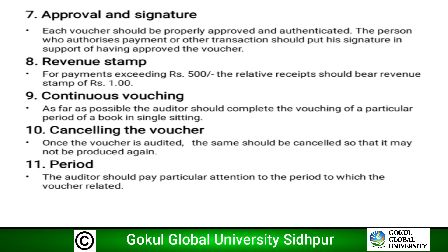Continuous vouching: as far as possible, the auditor should complete the vouching of a particular period of books in a single sitting. Cancelling the voucher: once the voucher is audited, the same should be cancelled so that it may not be processed again. Period: the auditor should pay particular attention to the period to which the voucher relates.